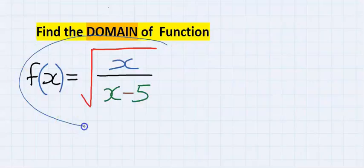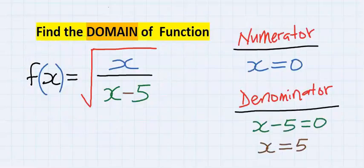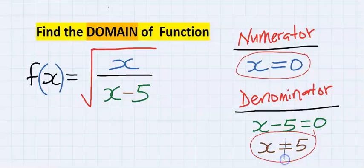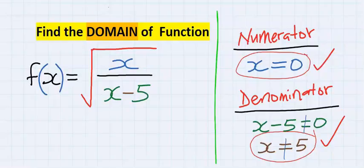Hence, let's solve this problem according to the rule. For the numerator, x can be equal to zero, but at the denominator, x cannot be equal to zero. Next, we put these two answers together in our final answer.